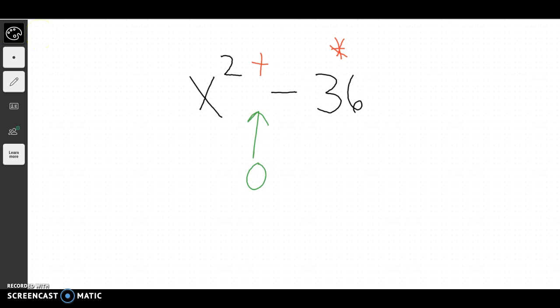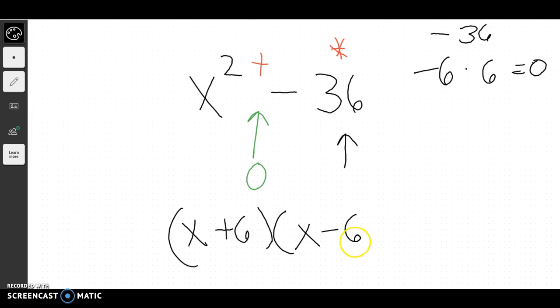So I have to think of something that would multiply together to give me negative 36 but add together to give me 0. Well, 6 times 6 gives you 36, but it's negative, so one of them has to be negative. And negative 6 plus 6 would give me 0. Oh, so I should just have x plus 6 and x minus 6.